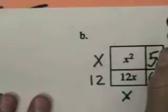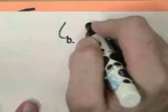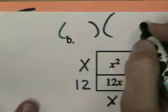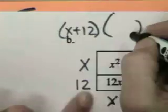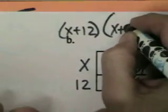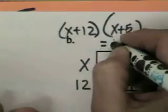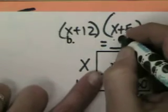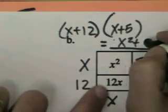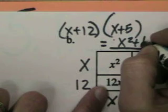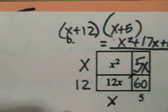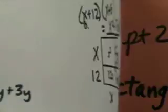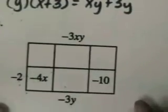And x times 5 is 5x. So let's write out our, what we've got here. Let's see. x plus 12 times x plus 5 will equal x squared plus, oh, these two will combine, 17x plus 5x. 60.